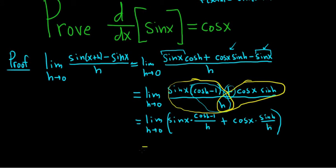So this is going to be equal to, taking the limit, we're going to get sine x times 0 because this limit here is 0. This goes to 0.